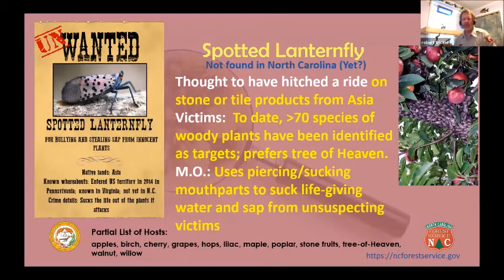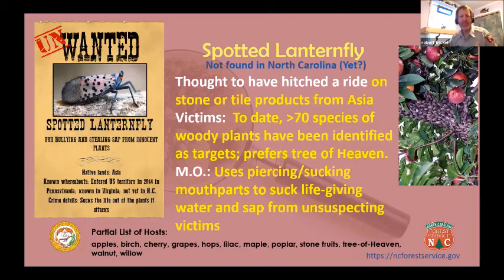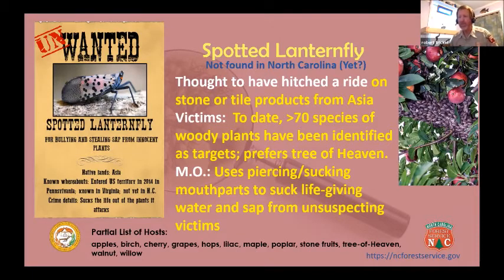I'm going to cover one that is not yet found in North Carolina — the spotted lanternfly. It's thought to have come into North Carolina hitching a ride on stone or tile products. There have been more than 70 species of woody plants identified as hosts so far. It does prefer the tree of heaven, also called ailanthus, which is actually a non-native invasive itself. There are some studies going on to see if it requires tree of heaven as part of its life cycle.